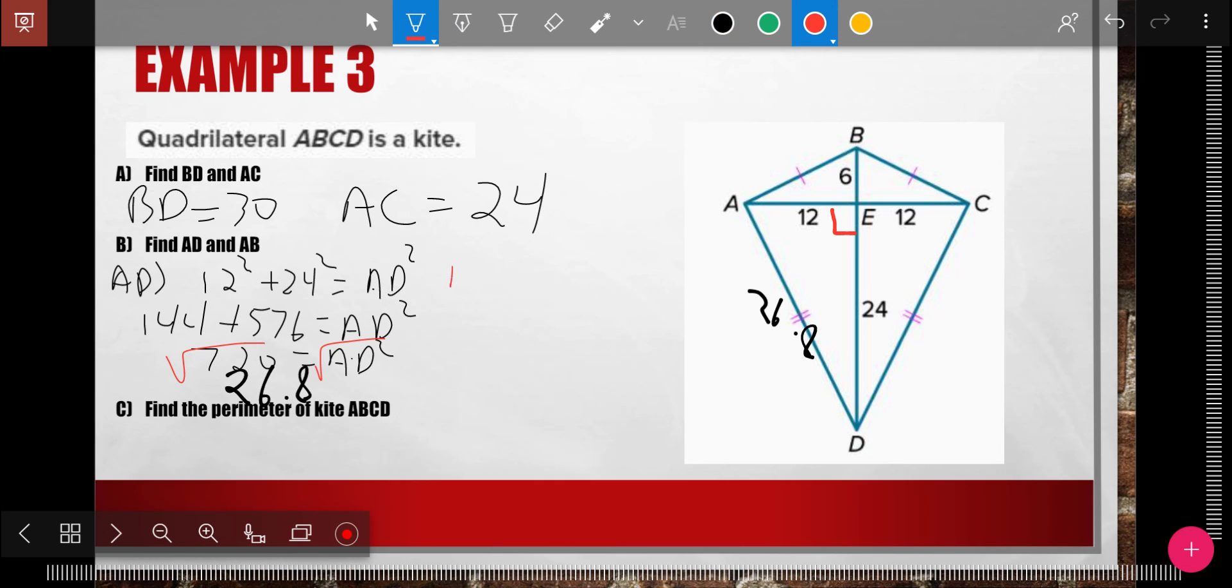All right. Then I want to find AB. And so I'm going to do the same kind of thing here. A squared plus B squared equals C squared. The C has to be across from the 90. So again, AB has to be the C.